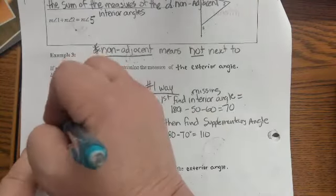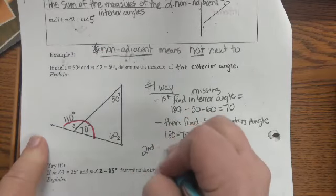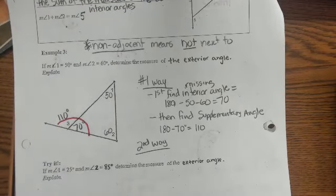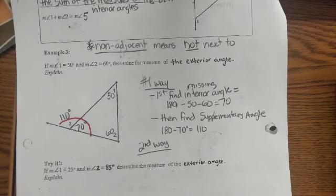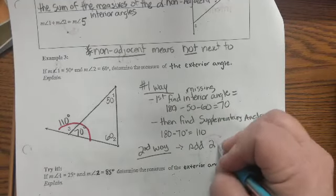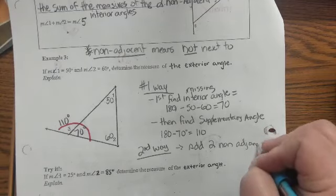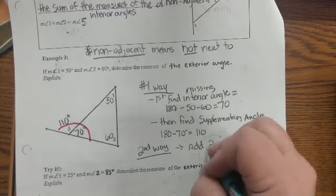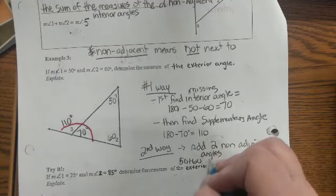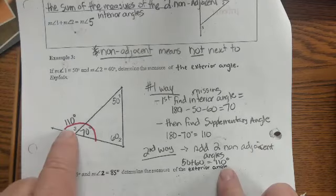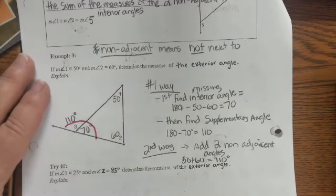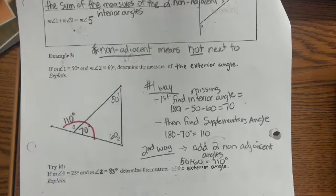The second way, which I think is way easier, is to know the theorem. You just add the two non-adjacent angles to get the exterior angle. All I do is 50 plus 60, which gives me 110. I still get 110 but it's only one step. It just depends on what situation is easier, but if you find one way works for you, you should always do it.